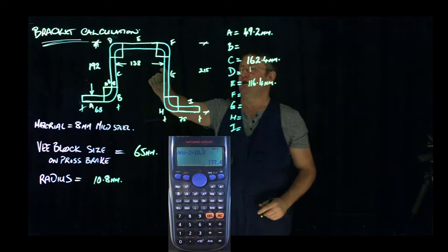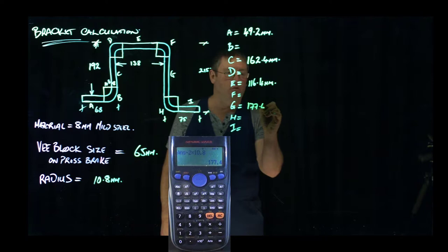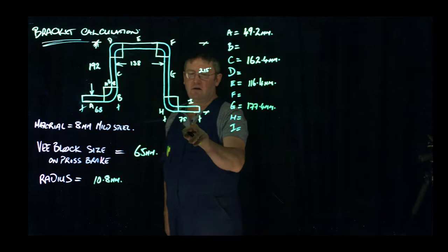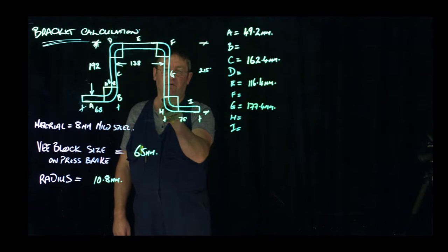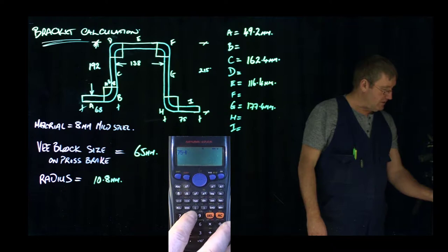And we're down to the last one, which is I. Straight for I. So 75 from the outside to the outside. So take off a material thickness, take off a radius off 75. So 75 minus 8 minus 10.8 equals 56.2mm. They are all our straights.